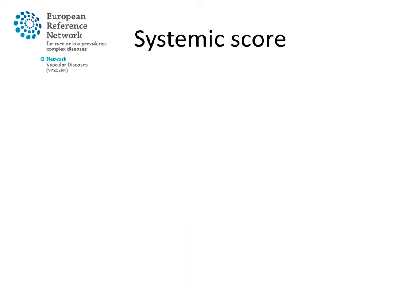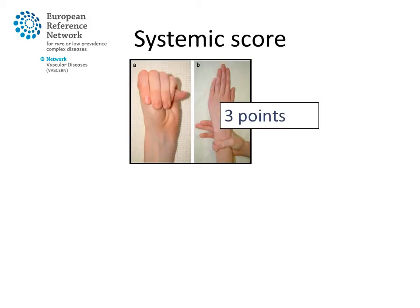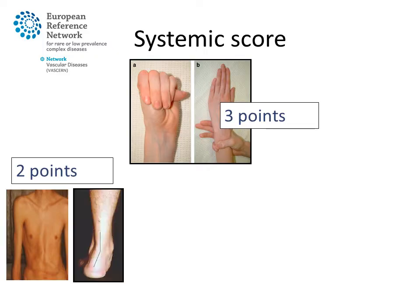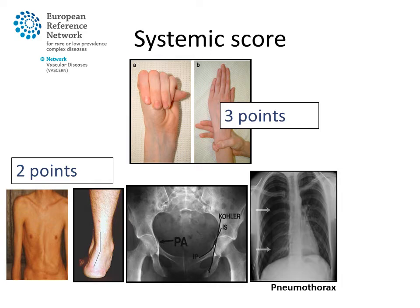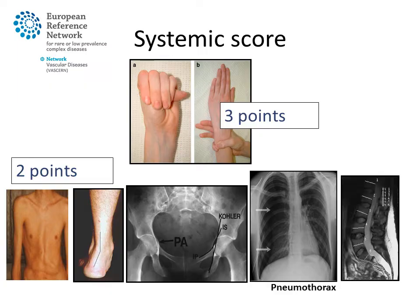In order to score these manifestations in different organ systems for diagnostic purposes, a so-called systemic score has been developed, assigning points to each manifestation. This ranges from three points for arachnodactylia, two points for pectus carinatum, for hindfoot deformity, for radiological abnormalities of the hip bone called protrusio acetabuli, for pneumothorax, and for widening of the dural sac or dural ectasia.